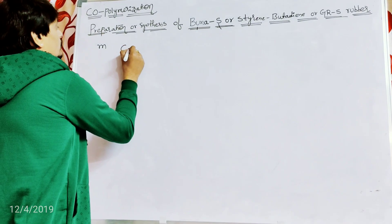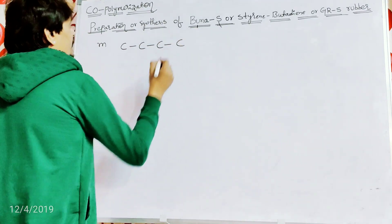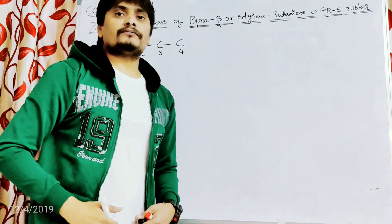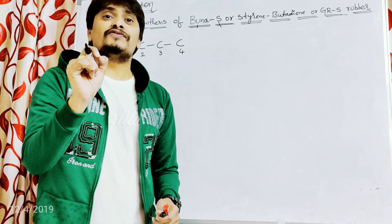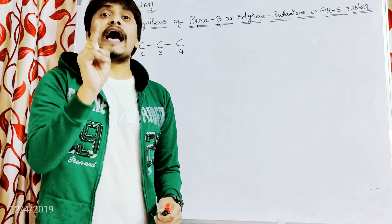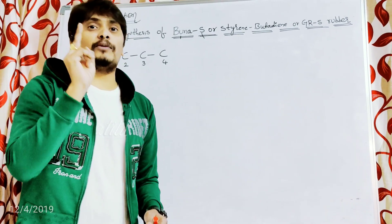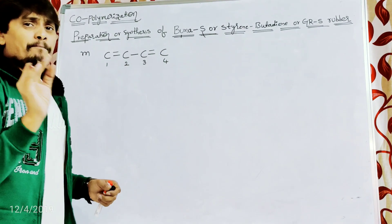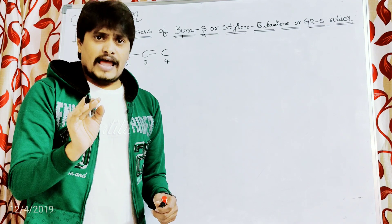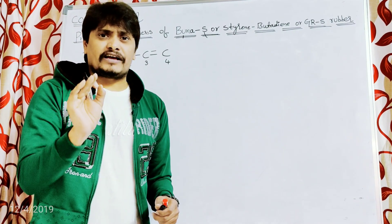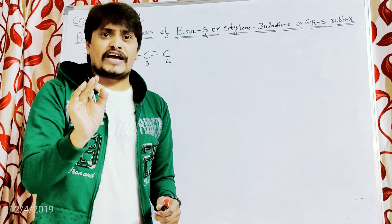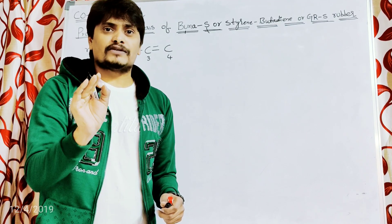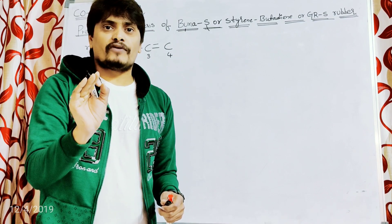Butadiene has four carbons (C1–C4). We label the carbons 1, 2, 3, 4. It is 1,3-butadiene: 'diene' means two double bonds at positions 1 and 3. To get the actual structure from the basic skeleton, we must satisfy the valency of each carbon atom by ensuring four bonds around each, placing hydrogen atoms wherever bonds are lacking.